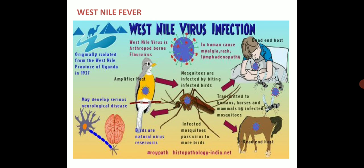The mosquitoes are infected by biting infected birds, and those are transmitted to humans, horses and mammals by infected mosquitoes. Infected mosquitoes can also pass the virus to more birds, and birds are natural virus reservoirs. In humans, West Nile fever causes malaise and also rashes and lymphadenopathy.